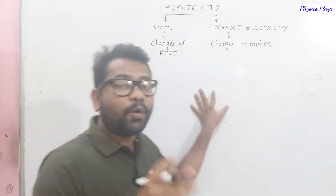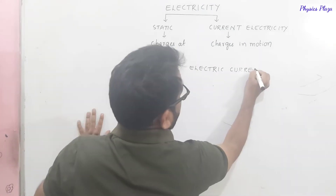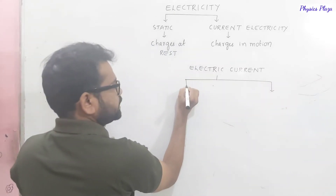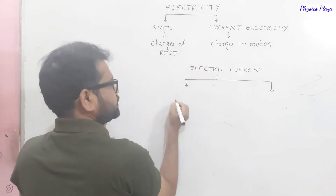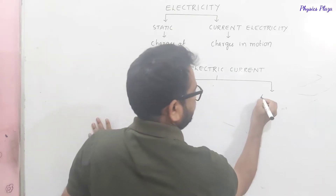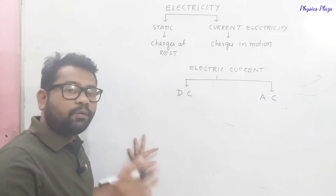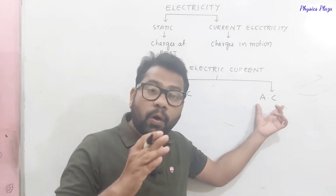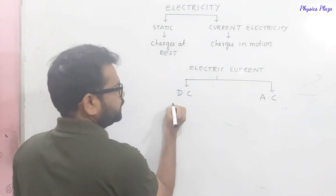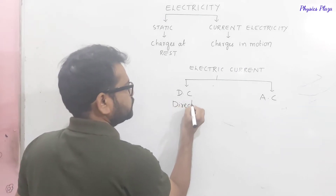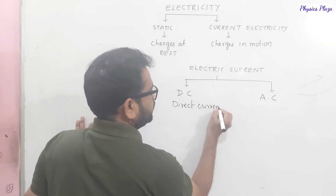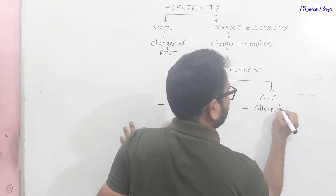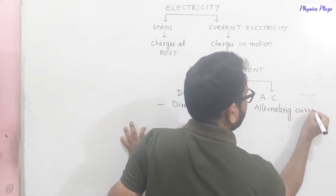Now let us see what are the types of current. Electric current is of two types: DC currents and AC currents. DC stands for Direct Current, and AC stands for Alternating Current.